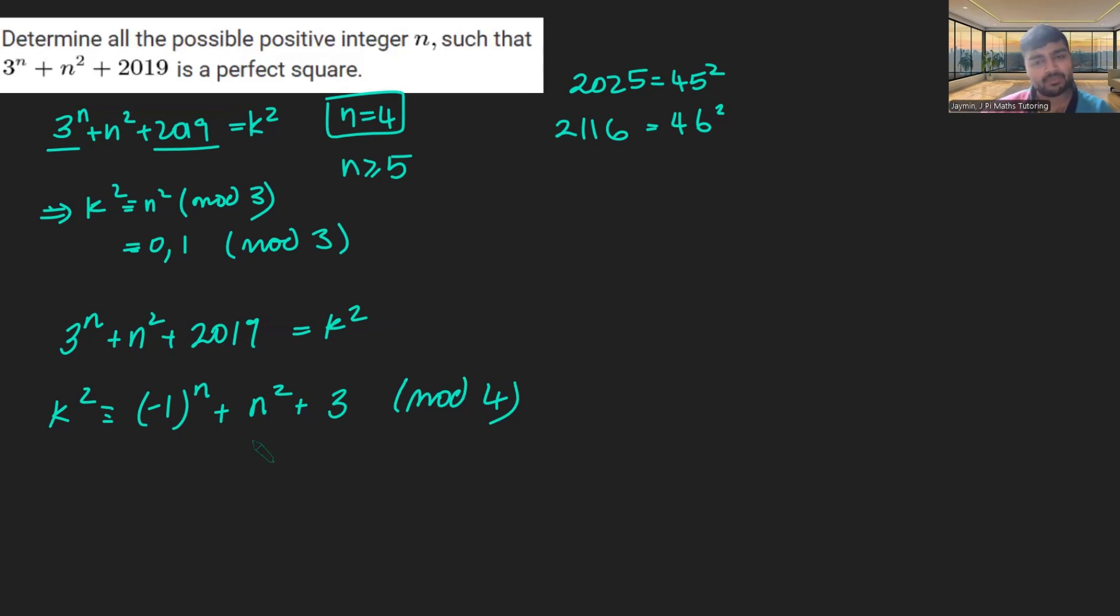And now if we stare at this and we just split this into odd and even cases for n, if n is odd, minus 1 to an odd number, that's minus 1. n squared, well, if n is odd, square numbers or an odd number squared mod 4 would just be 1. And then you get plus 3 and you get minus 1 plus 1 plus 3, which is 3. But then this suggests that k squared is 3 mod 4, which is impossible because square numbers can only be 0 or 1 mod 4.